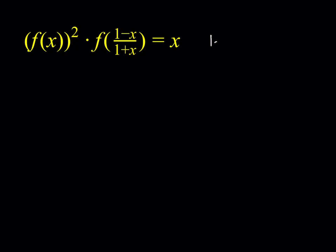The first thing I'm going to do is find the inverse of this function. I'm going to set it equal to y, and then replace x and y — switch the roles — so that I can write x as a function of y, and then you can safely say that it's the inverse function.